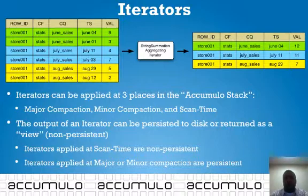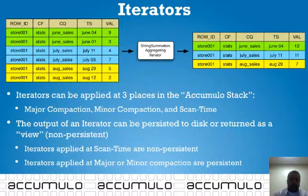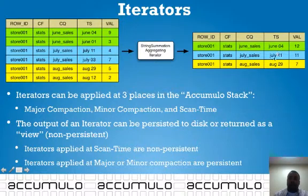Here's an example of an iterator. An iterator provides server-side functionality. For the purposes of understanding what an iterator is, we're going to use the aggregating iterator. If you look at the top of the screen, we have two tables: a detailed table and an aggregated iterator table.